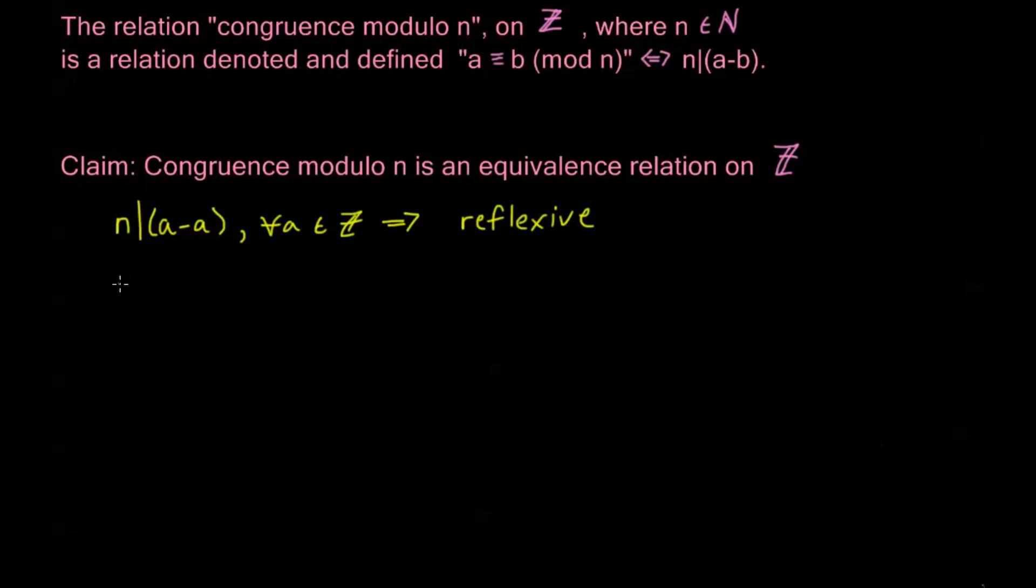Now, if I have that n divides a minus b, right, so n divides the difference, well, then it also has to be true that n divides b minus a. Right? This is just a difference between two values. So, if n divides that, it definitely divides the negative value.